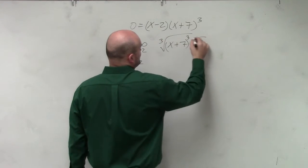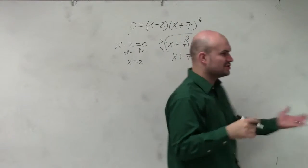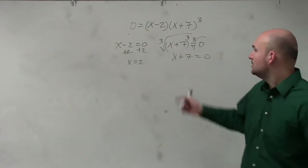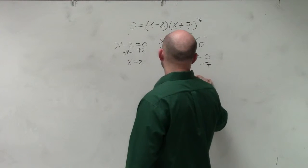Take the cube root of both sides. X plus 7 equals 0, right? Because the cube root of something cubed goes to 1. Now you just go ahead and solve. So subtract 7, x equals negative 7.